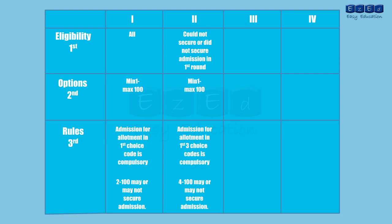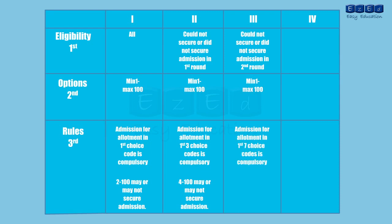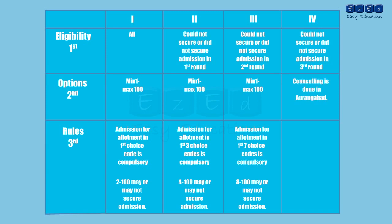For the third round, all students who could not secure admission in the second round can apply. The candidate can provide minimum 1 and maximum 100 choice codes. An allotment for the first 7 choice codes is compulsory, while securing admission for allotments between choices 8 to 100 is not compulsory. For the fourth round, all students who could not secure admission in the third round can apply. Counselling is done in Aurangabad. Everyone gets a seat. Remember that this is the last CAP round and no further rounds will be held.